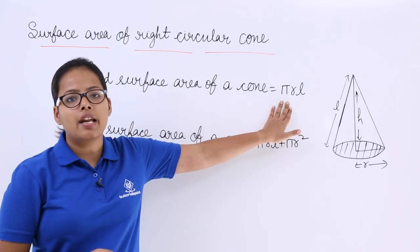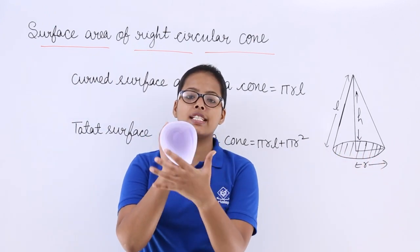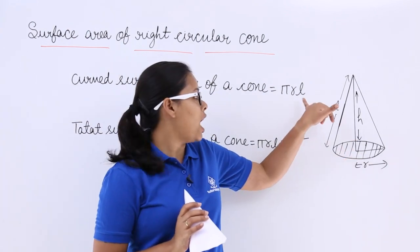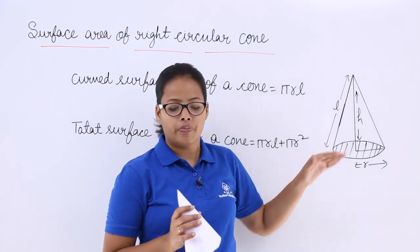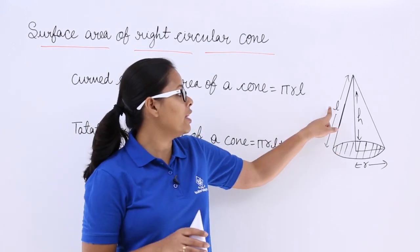So this area is πrl where r is the radius of this base, you can see here this is a circle. So circle always has a radius which is r and length of this slant part of this cone having length l.